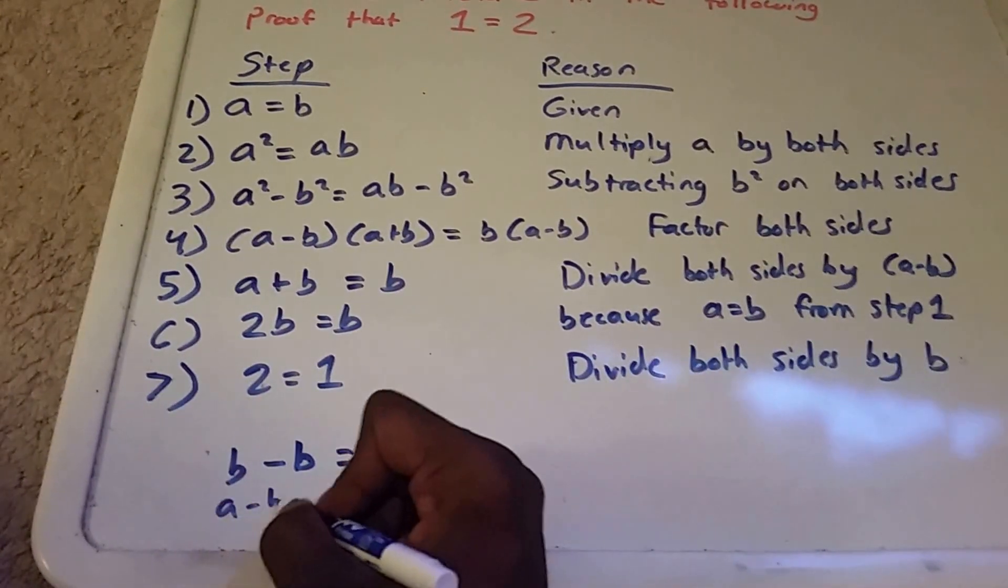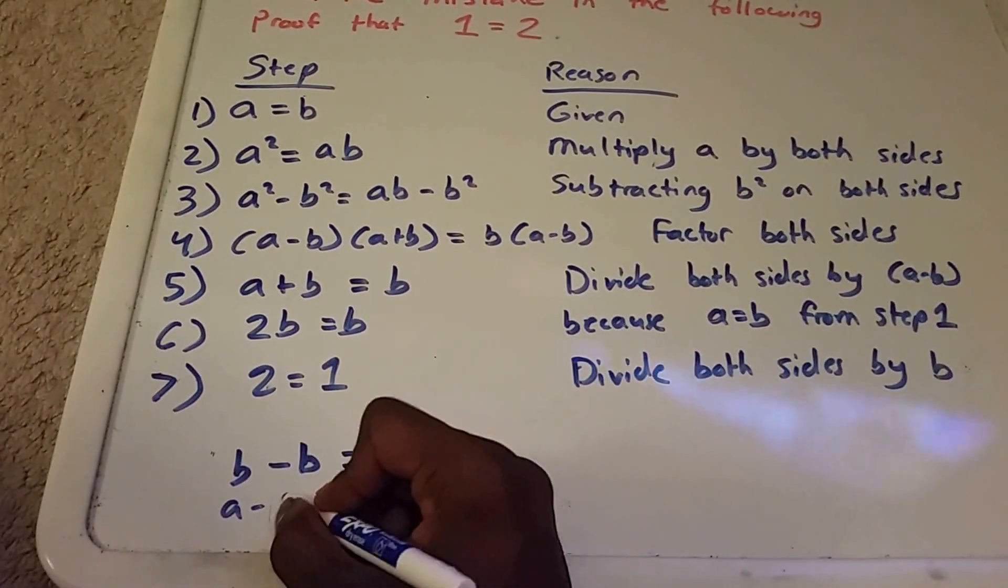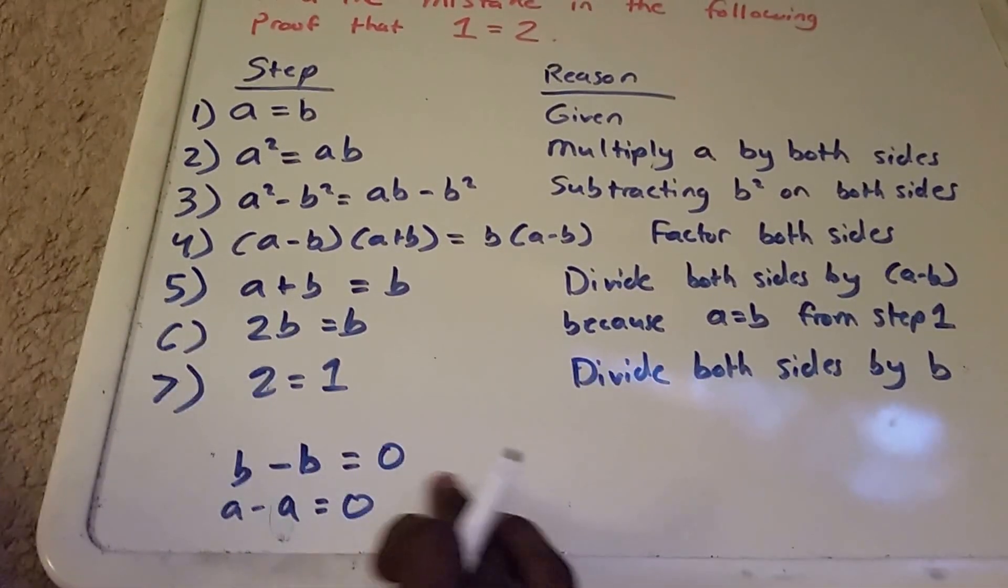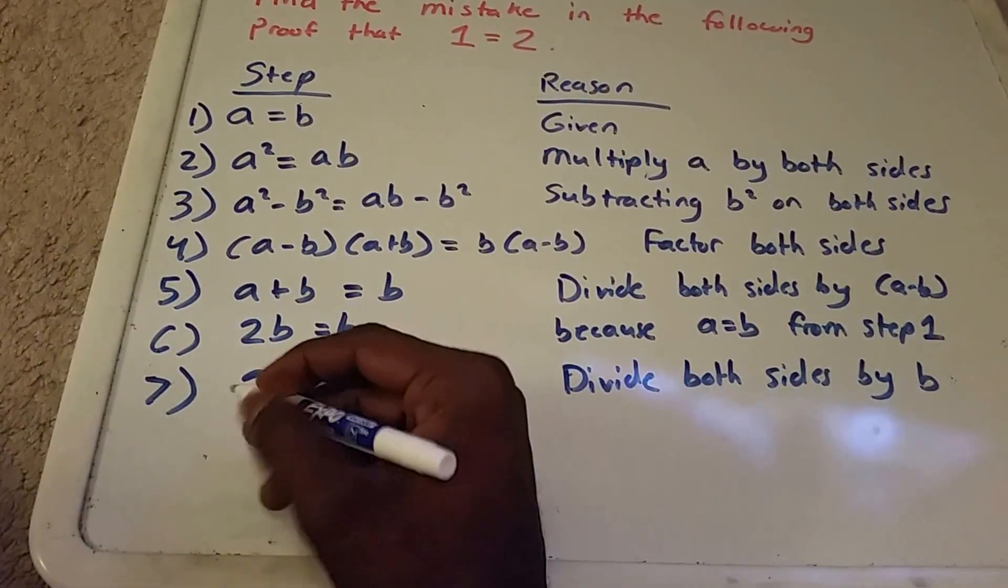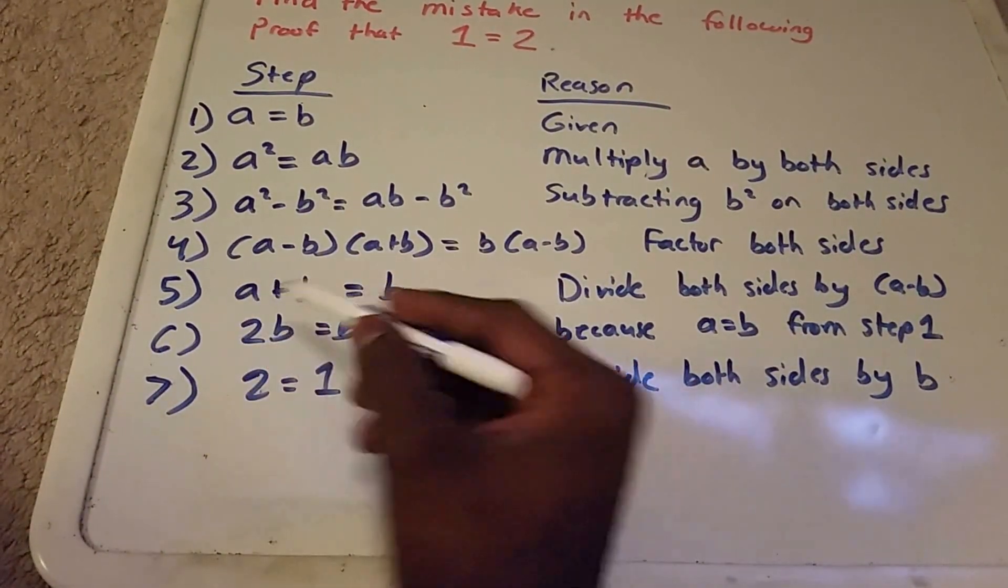And if we had a minus b and I replace b with a, we get 0. And as we all know, you cannot divide by 0.